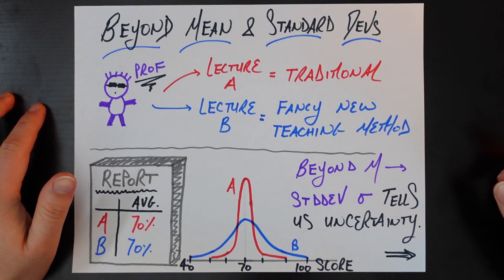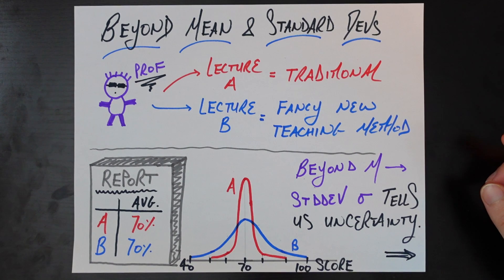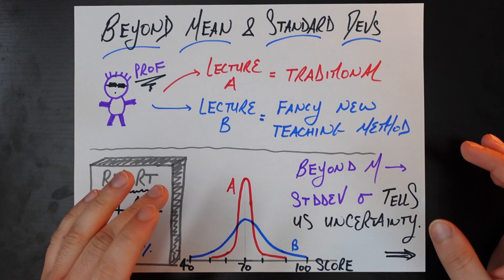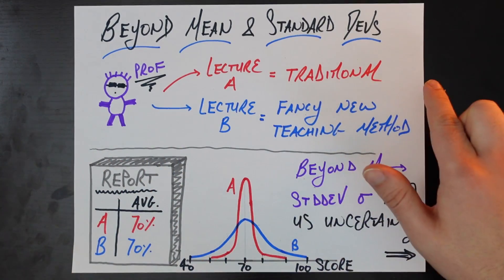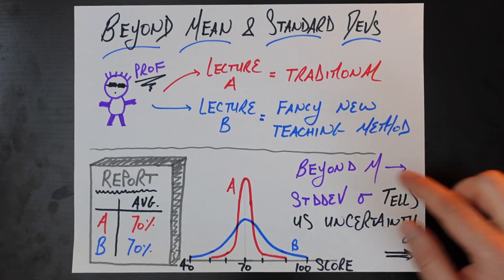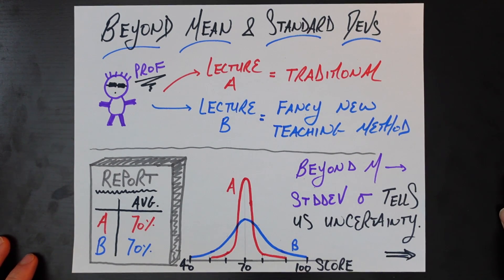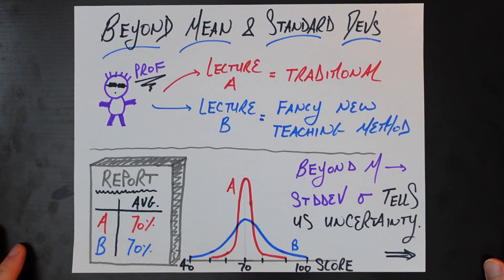So let's start with a similar example here. Let's say that you are a crazy college professor, and let's say you teach statistics and you just learned about this fancy new teaching method and you want to see if it's any good. So you teach two lectures, lecture A and lecture B. For the students in lecture A, you go with the traditional teaching method that you've been doing for years, and for the students in lecture B, you try out this fancy new teaching method. So let's say the course goes by, all the students take their final exams, all the students get the same final exam of course, and you measure the scores on that final exam on a scale of 0 to 100.